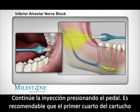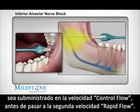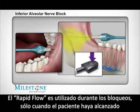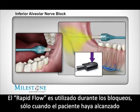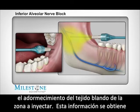Continue the injection by depressing the foot control pedal. It's recommended that the first quarter of the cartridge be dispensed using the control flow rate before transitioning to the second, faster rapid flow rate. The rapid flow rate is used during block injections only after your patient has acknowledged that they have achieved soft tissue anesthesia of the area being injected.